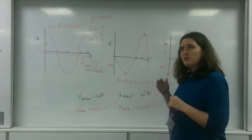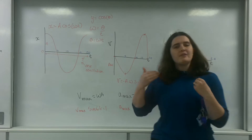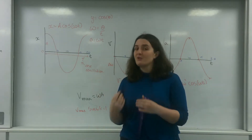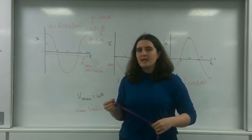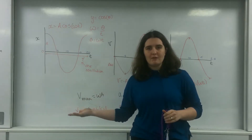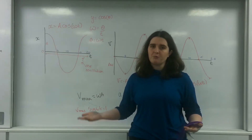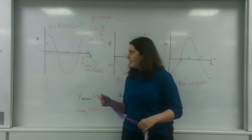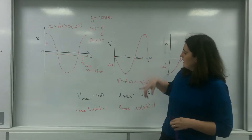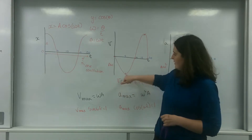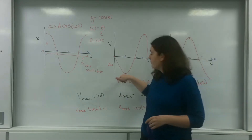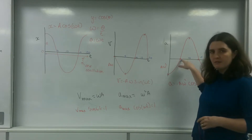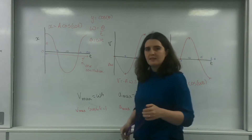Because sine and cosine are not equal to 1 at the same place — if you draw a sine and a cosine graph they reach their maximum at different points — this means you get maximum acceleration and maximum velocity at different times. When velocity is maximum, the acceleration is zero. And that does make sense.